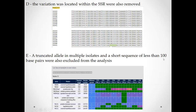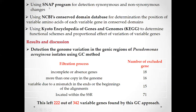If the base pair number is less than 100 base pairs, we consider it not a real gene, because genes are typically more than 100 base pairs in length, so we exclude it from the analysis. We also used the SNAP program to detect synonymous and non-synonymous changes. Synonymous change means changing the DNA does not change the protein, while non-synonymous change means changing the DNA leads to a change in the protein. Non-synonymous change is important because changing the protein enables escape from the immune system.